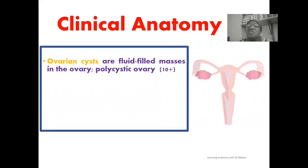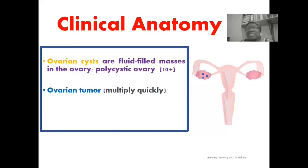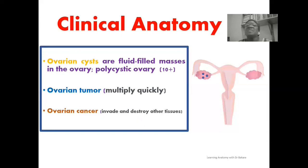In clinical anatomy, ovarian cysts are fluid-filled masses seen within the ovary. When there are more than ten, it is referred to as polycystic ovary, which disrupts folliculogenesis and results in infertility. Ovarian tumors arise when cell proliferation within the ovary becomes uncontrollable and rapid. When cells gain the capacity to be malignant and invade surrounding organs, they become ovarian cancer, destroying the functionality of invaded tissues.